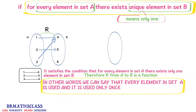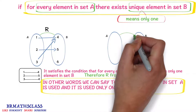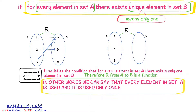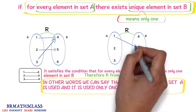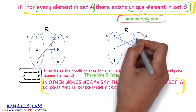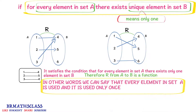We will try to understand with one more example. Consider a relation r from a to b. For every element in set a, check whether there exists a unique element in set b. Here, 1 is related to 5, 2 is related to 4, and 3 is related to 6. Every element in set a is used and it is used only once, so we can say that r is a function from a to b.